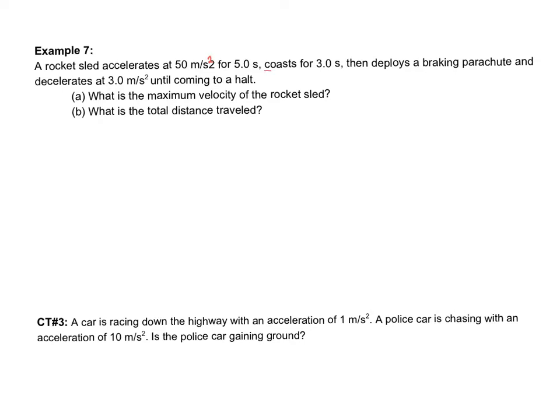It coasts, meaning that it continues at that same speed for three seconds, then deploys a braking parachute and decelerates at 3 meters per second squared until it comes to a halt. What is the maximum velocity of the rocket sled? All right, well, let's go ahead and look at it.